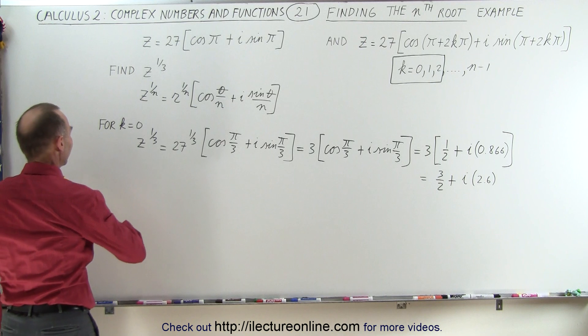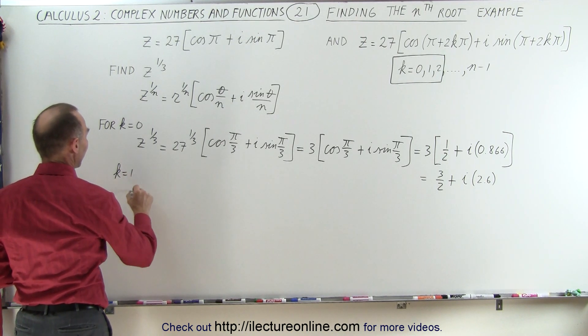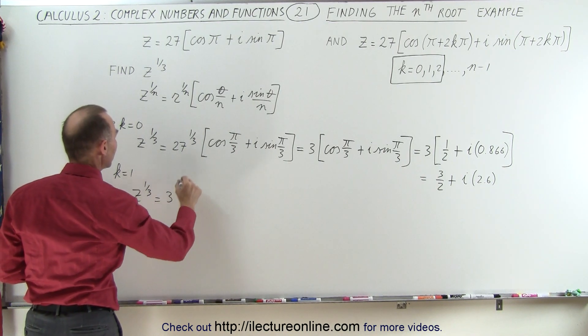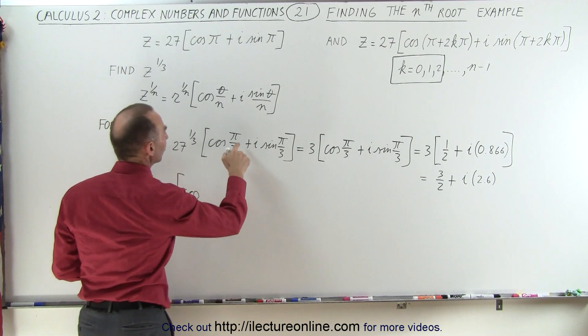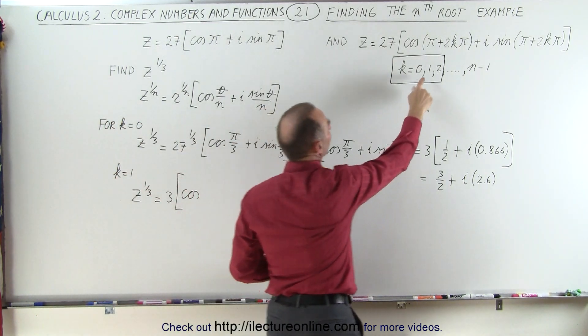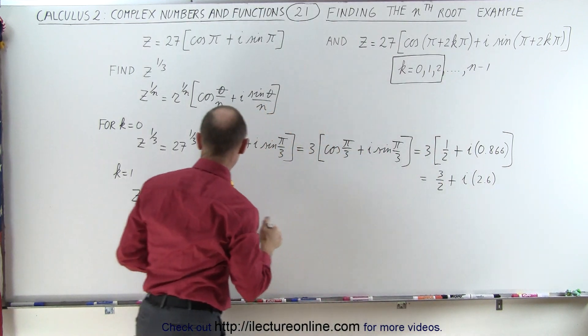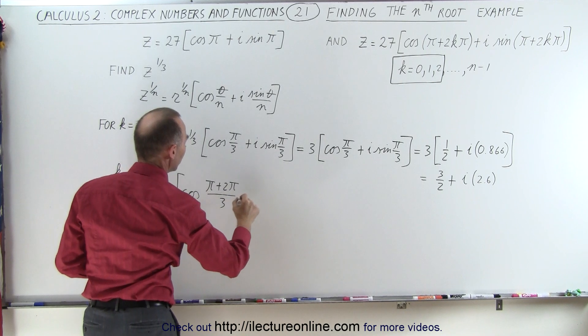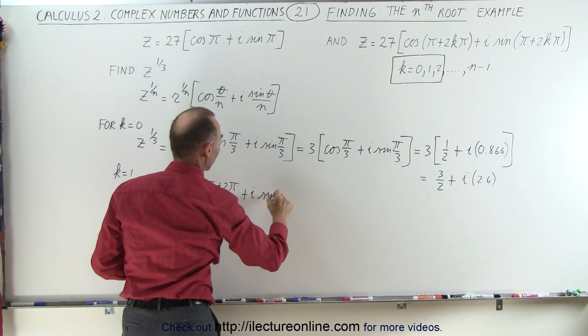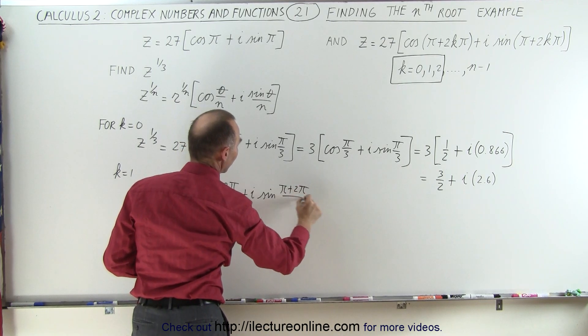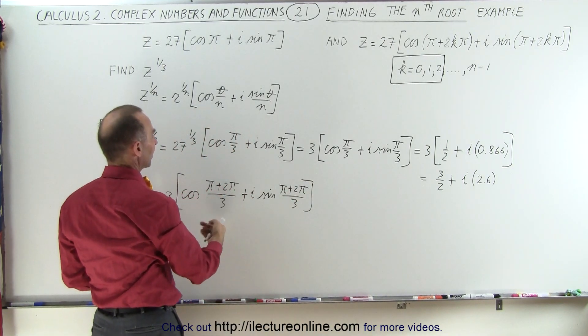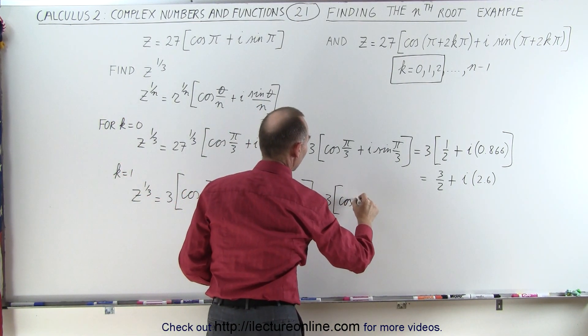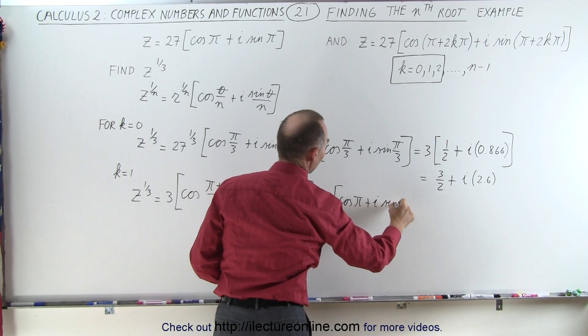But now we're going to do it again for k equals 1. And so we have z to the 1/3 power is equal to 27 to the 1/3 power, which is 3 times the cosine. And here we're going to take π plus, when k is equal to 1, it would be π plus 2π, so it would be π plus 2π, divided by 3, plus i times the sine of π plus 2π, divided by 3. Of course that's 3π divided by 3, which is π, so this can be written as 3 times the cosine of π plus i times the sine of π.